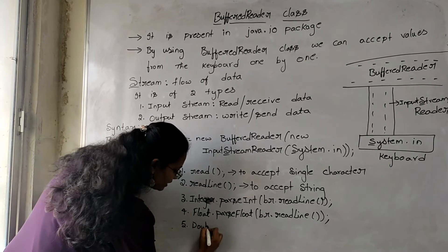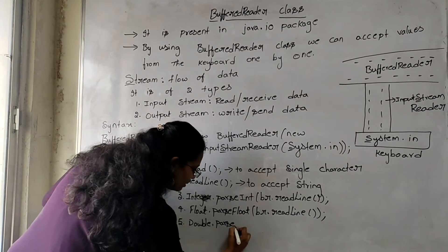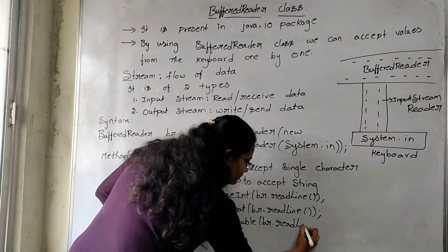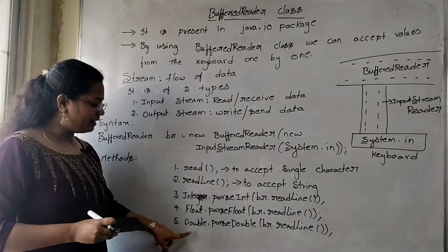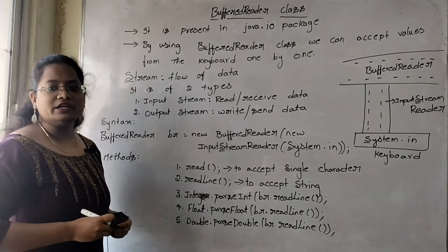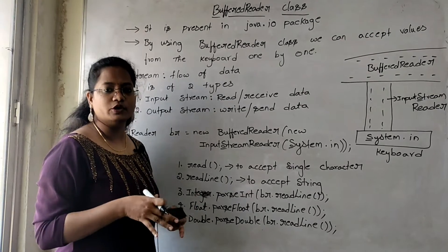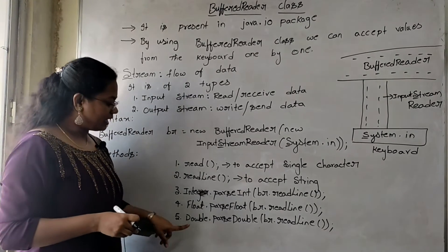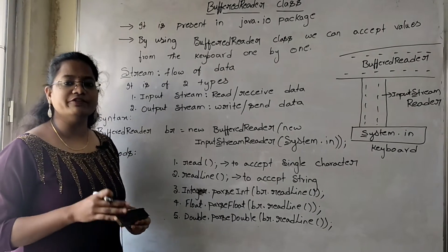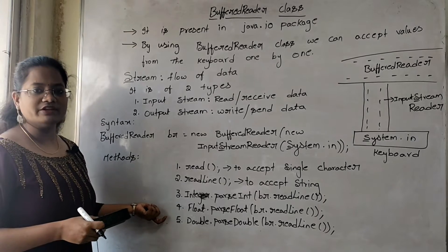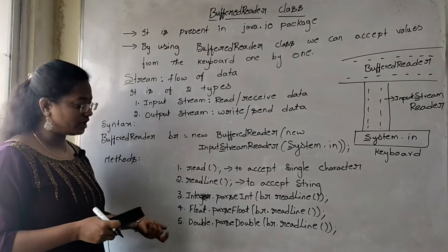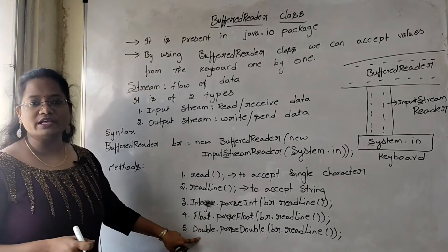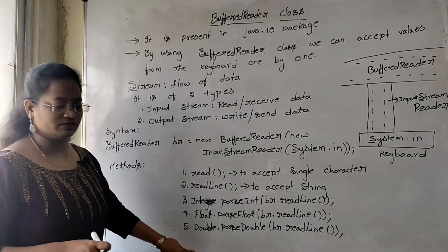For Double type of data, use Double.parseDouble(br.readLine()). Float also stores decimal point values, and Double also stores decimal point values. In an interview they will ask: what is the difference between Float and Double? Float can accept up to 6 decimal places after the decimal point. But Double data type accepts up to 15 decimal places after the decimal point. That is the main difference between them.